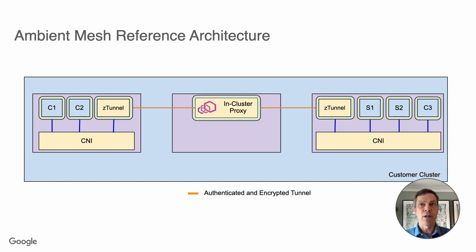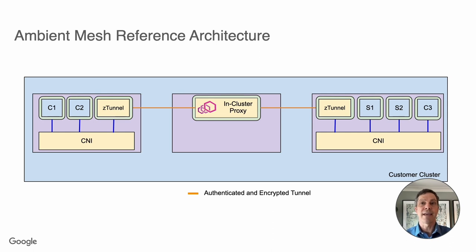When L7 policies are used, the L4 component securely redirects traffic through a Waypoint proxy, which is a full proxy that can handle the L7 requirements of Istio. Similar to the L4 component, the Ambient reference implementation provides an Envoy-based Waypoint proxy deployed in its own pod to handle L7 policy enforcement. The Waypoint proxy is deployed in the customer's cluster and managed by Istio.